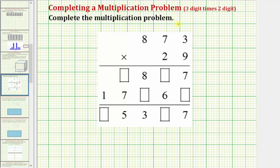We're asked to complete the multiplication problem. We have 873 times 29. Notice how some of the digits have been provided for us — we need to enter the missing digits in the boxes.